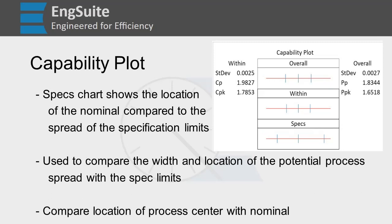Overall and within are the ones that show your potential process spread. The leftmost bar on these is three standard deviations below. If you go to the right, the rightmost is three standard deviations above.